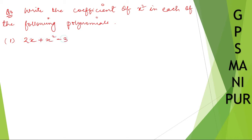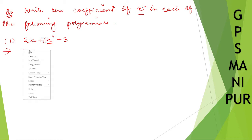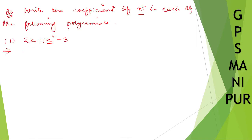2x plus x square minus 3. We need to find the coefficient of x square. X square is here — if there is nothing before x square, it is always one. So the coefficient of x square is one.